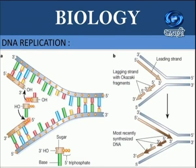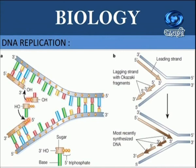Different steps involved in the replication of DNA in eukaryotic type of cell. Step one is called the activation of nucleotides. The four types of nucleotides of DNA — adenine, guanine, cytosine and thymine — are present in the nucleoplasm. They are activated by ATP in the presence of enzyme phosphorylase. This results in the formation of deoxyribonucleotide triphosphates: dATP, dGTP, deoxyribose CTP and deoxyribose TTP. The process is known as phosphorylation.